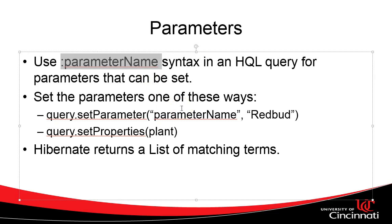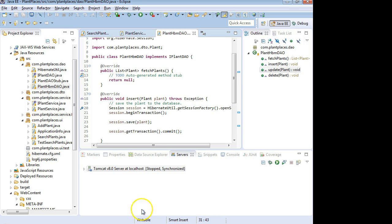Alternatively, one that works pretty well and is pretty handy, is we can just say query.setProperties. We can have it automatically match the properties on this object with the parameters we have specified in the query statement. This is probably easiest to see with an example rather than just explaining it. So let's do an example.